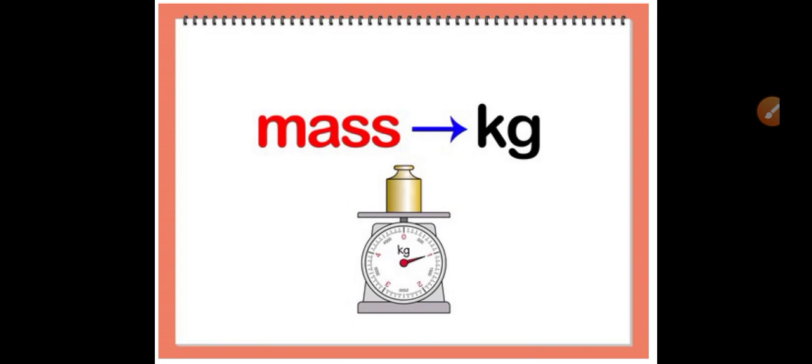Next one is mass. So let me tell you what is mass. The mass of a body is the quantity of matter contained in it, and the SI unit of mass is kilogram. And to measure mass we use beam balance and electronic balance.